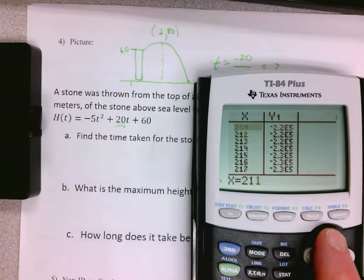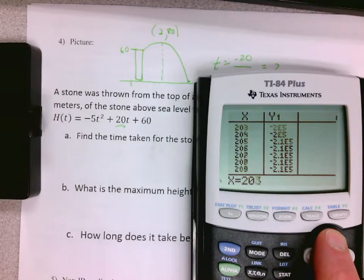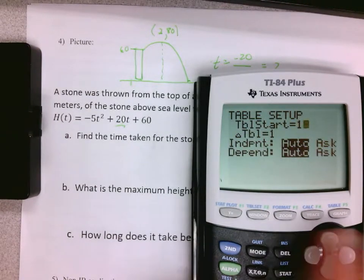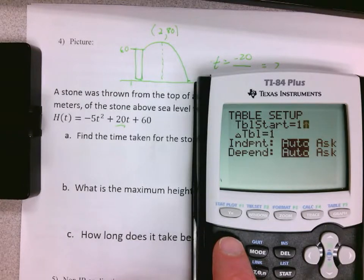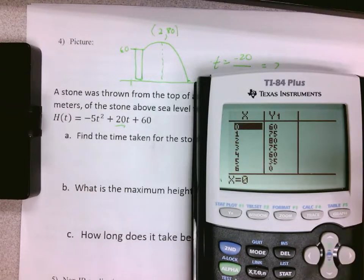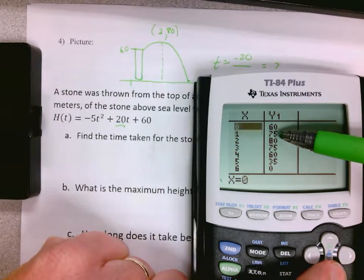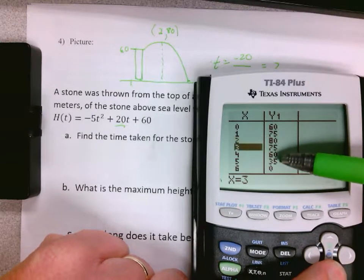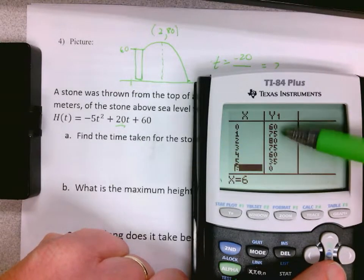I also have under here a table. You can see on the table what happens: the parabola starts at 60, goes up to 75, up to 80, back down to 75, 60, 35, 0. So you can see all the detail there. The graph right now is probably a little more helpful.